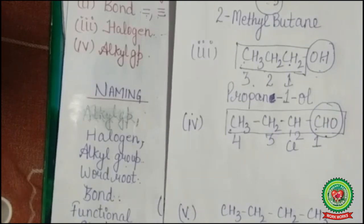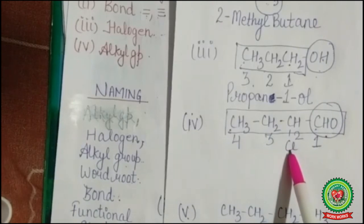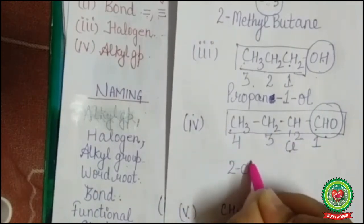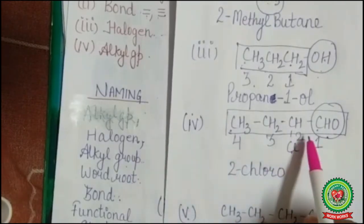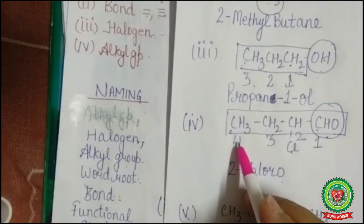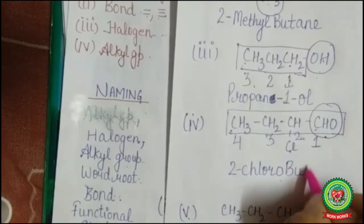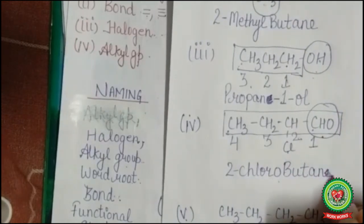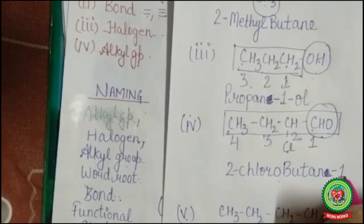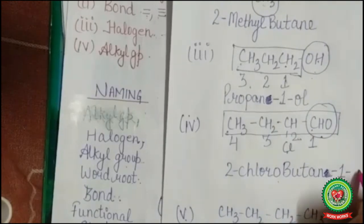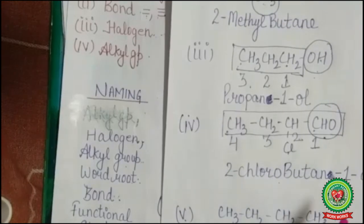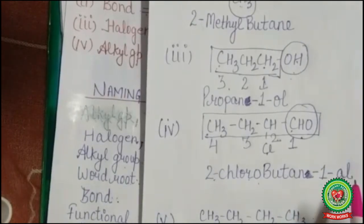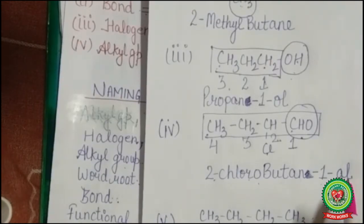For naming: halogen is present — Cl is there, so we write 'chloro', and it is attached to carbon number two, so '2-chloro'. No alkyl group. Word root: four carbons, so 'but'. Single bond, so 'ane'. Functional group is present — the 'e' is omitted — functional group is at carbon one, and the functional group is aldehyde, so we write 'al'. The name of the compound is 2-chlorobutan-1-al. Now practice the structures for nomenclature given in the exercises in your book.